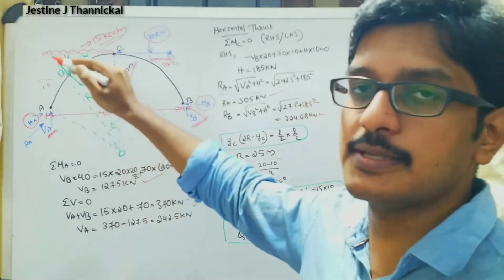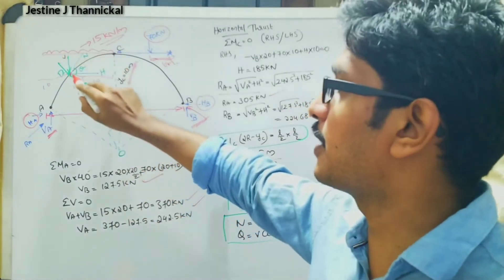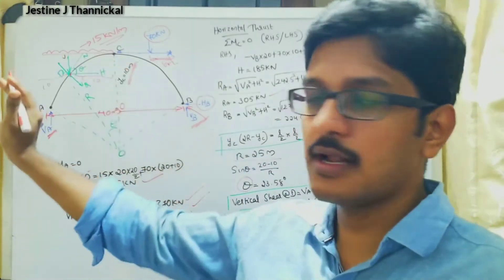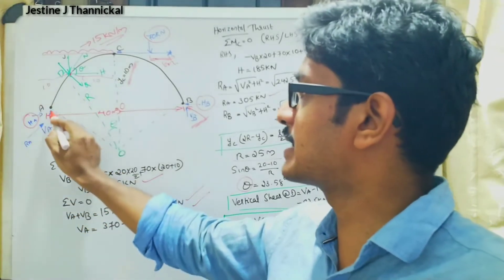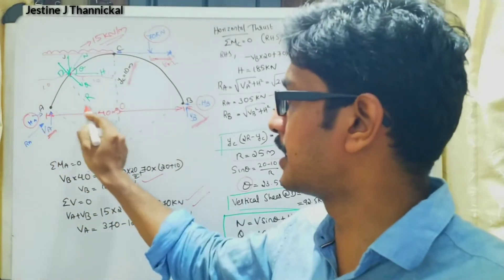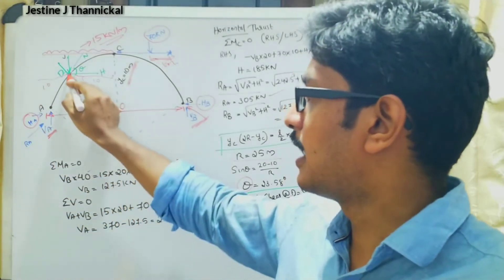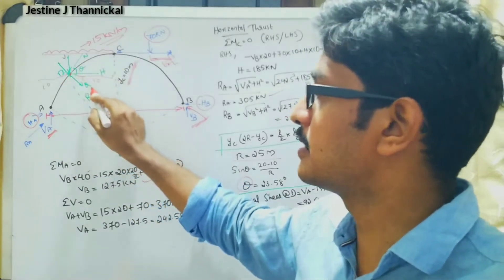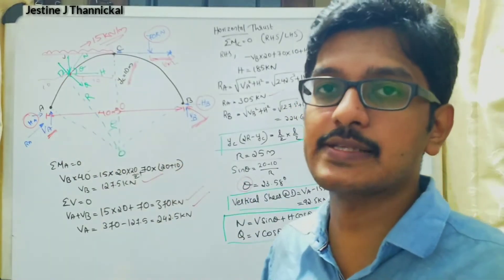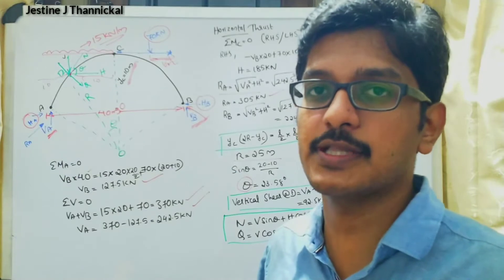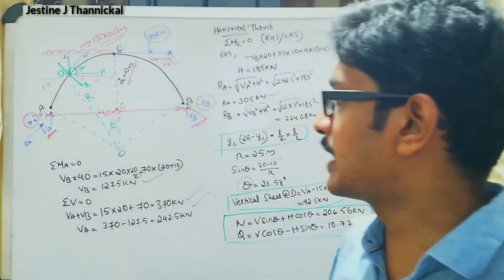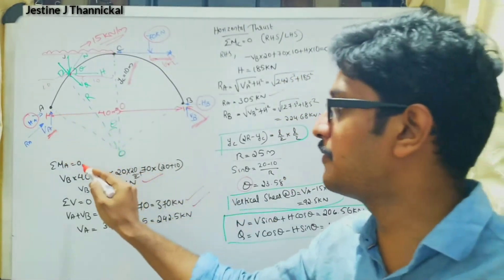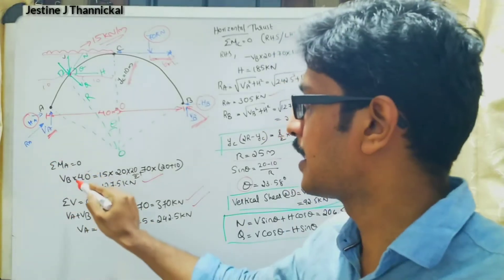Next, we consider point D on the left hand side at a distance of 10 meters from support A. At this section, we need to find the normal thrust and the radial shear. We already discussed those formulas in the previous section. Let us take moments about point A, setting sigma M equal to zero.